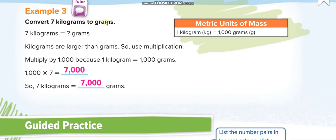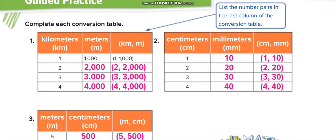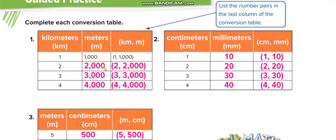Next example for kilograms to grams: seven kilograms equals how many grams? One kilogram is equal to one thousand grams, so seven kilograms is seven times one thousand, which equals seven thousand grams.